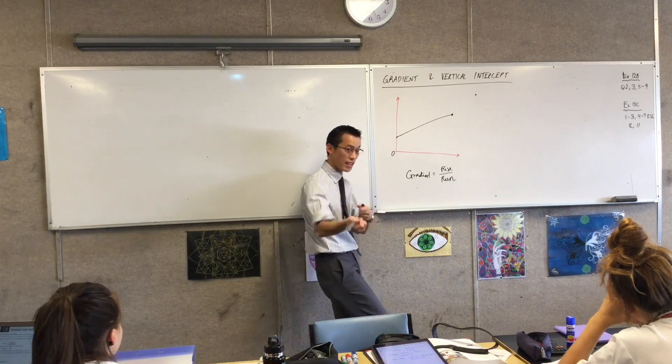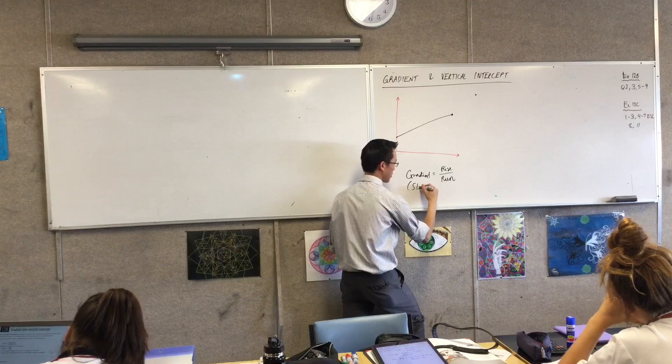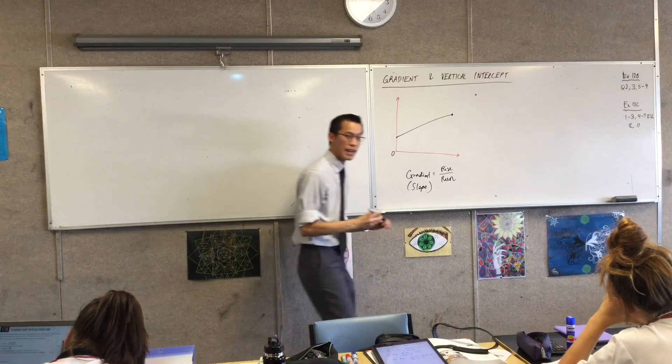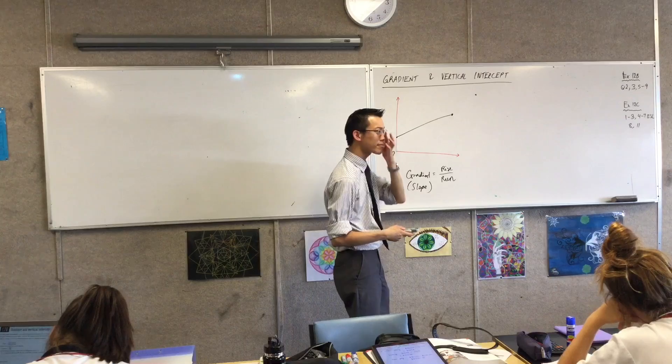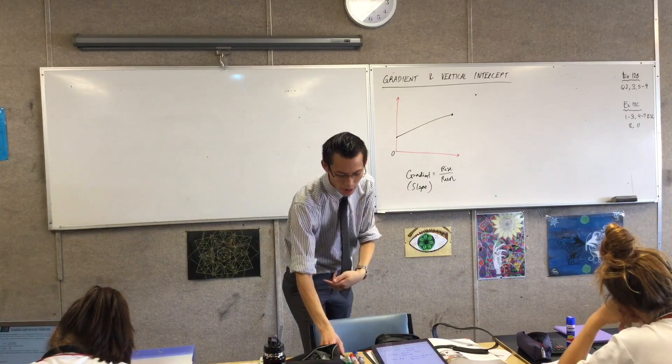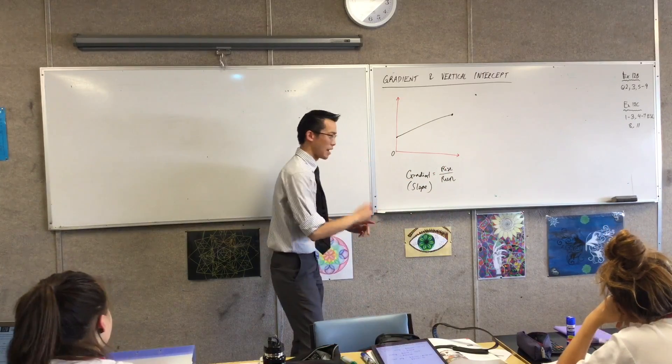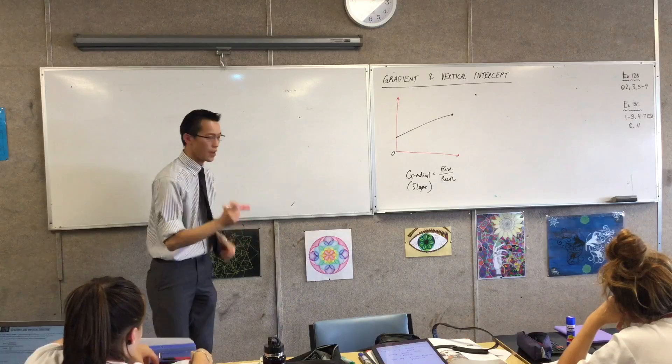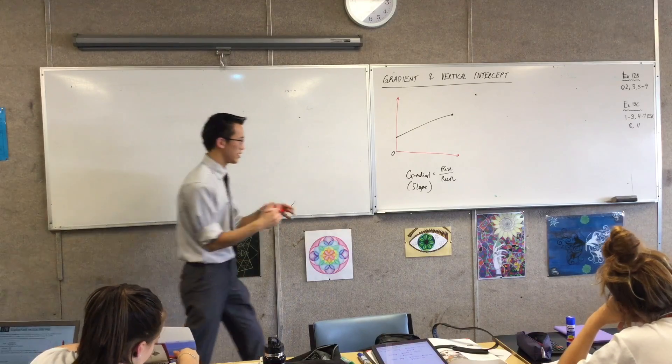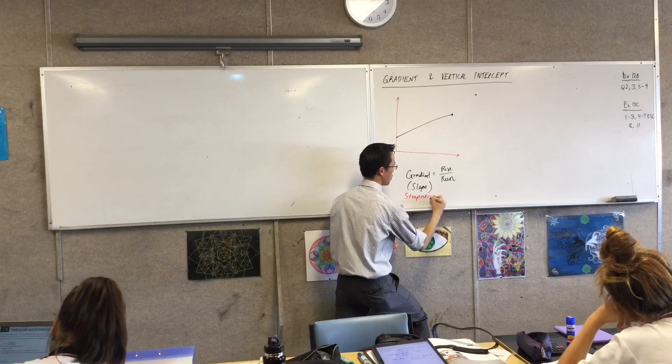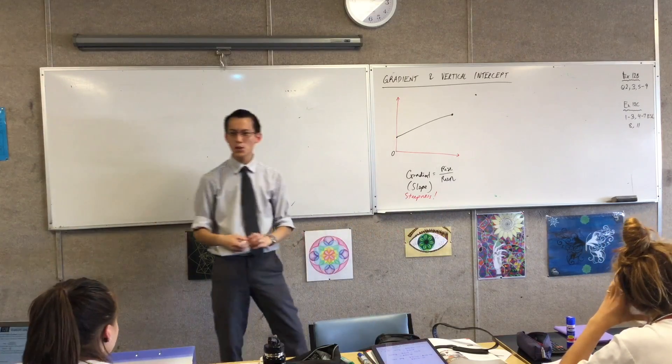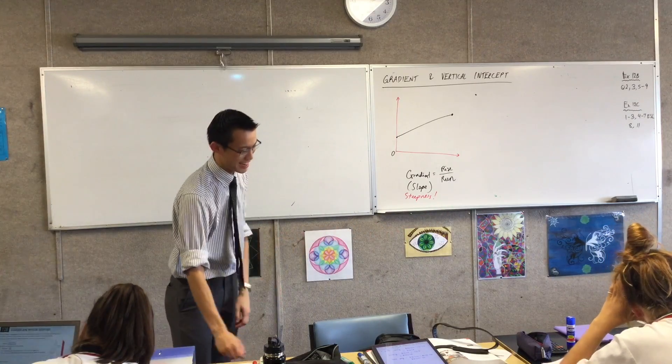Slope. Okay, so a synonym, and a really helpful one for gradient, is slope, and you'll hear that used interchangeably, they mean the same thing. Do you want to add something else? The steepness of the line. Yeah, that's really good. So I think all these concepts together, they all tell us what gradient is. I think steepness is maybe the most helpful one, right? Because it gives you a picture.